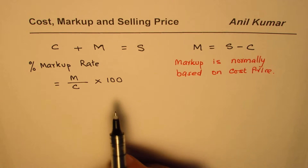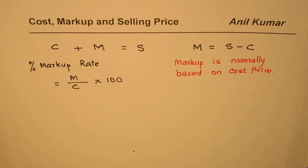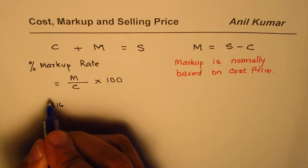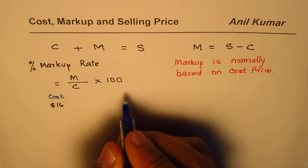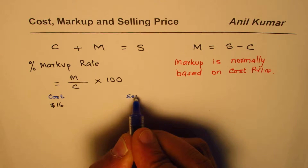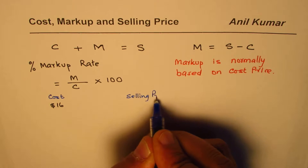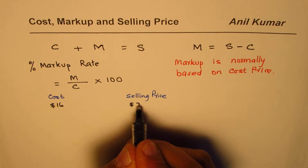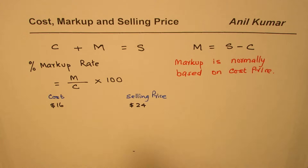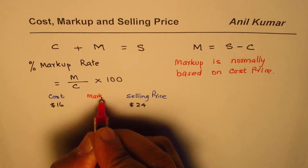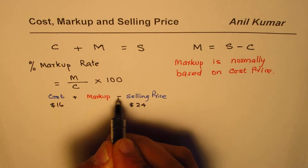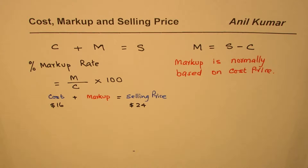Now let's take an example. Let us say the cost of an item is $16 and the selling price is $24. The question is: we need to find what is the markup. As you know, cost price plus markup equals selling price, and we are going to use this relation to find our answer.